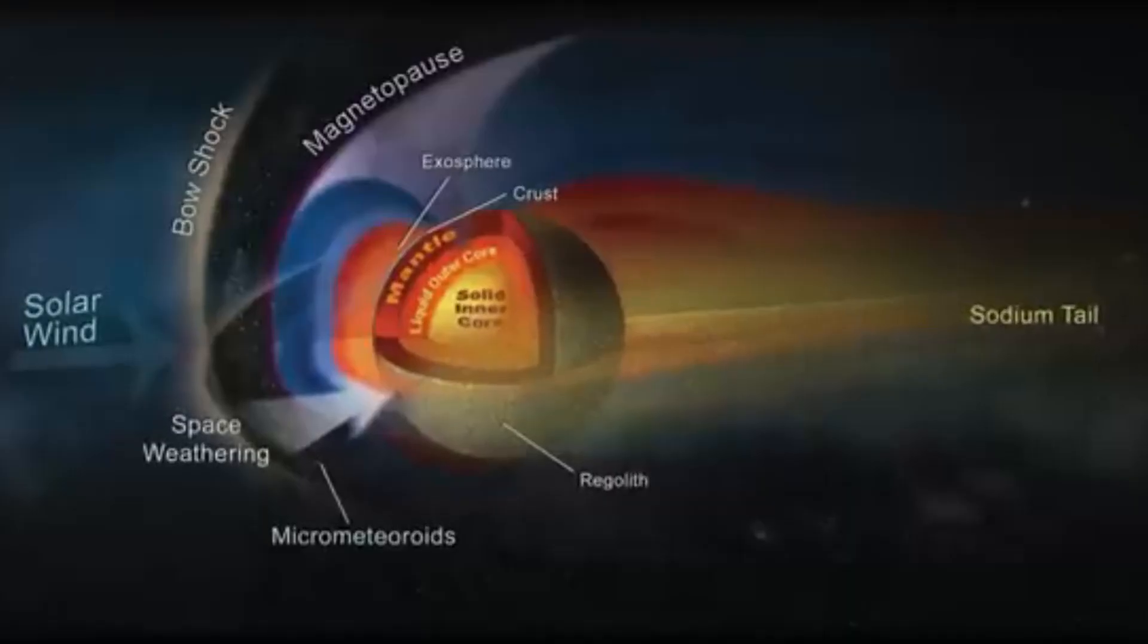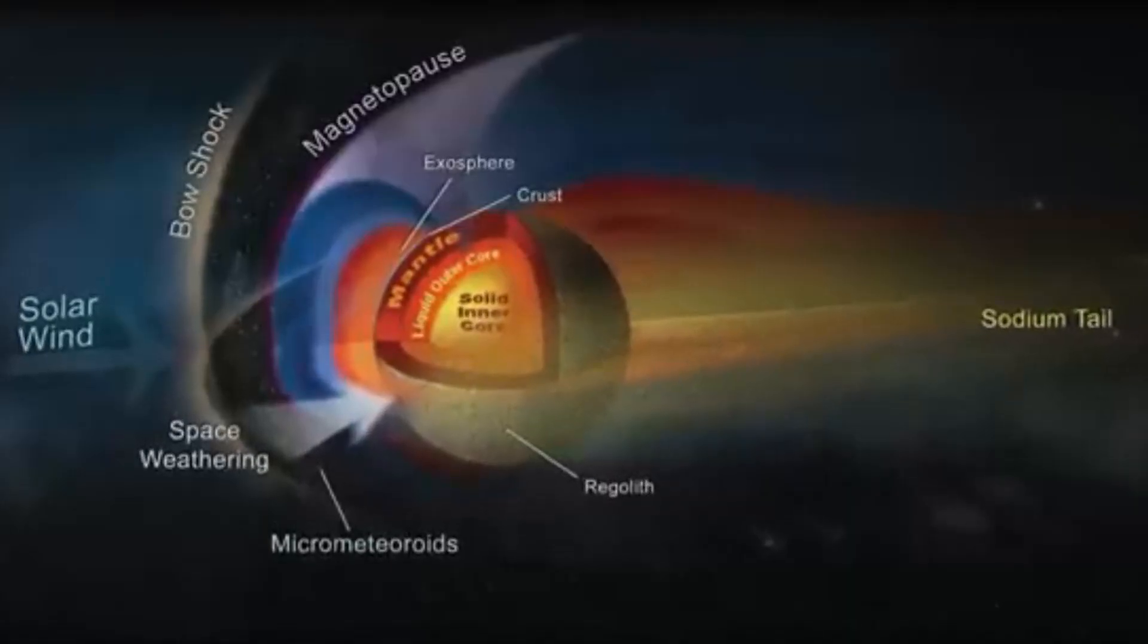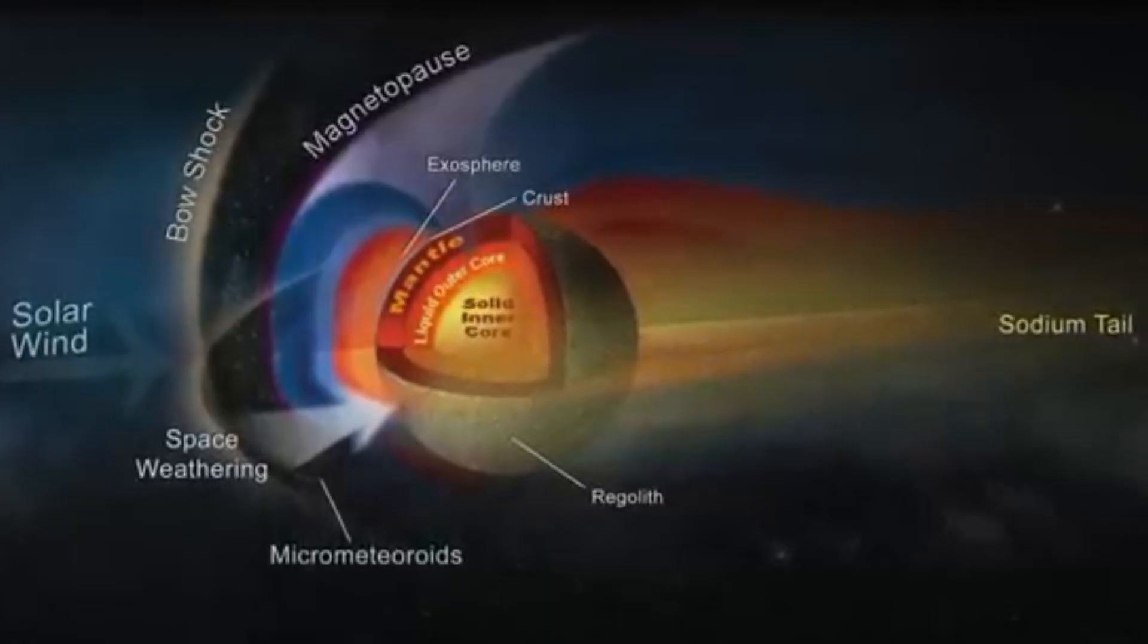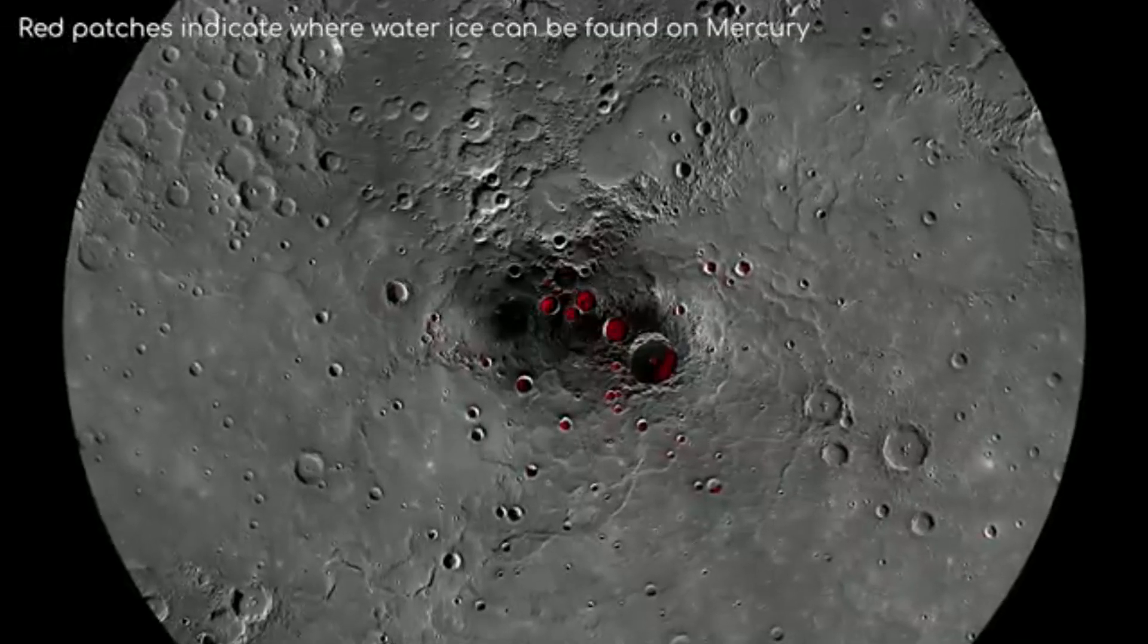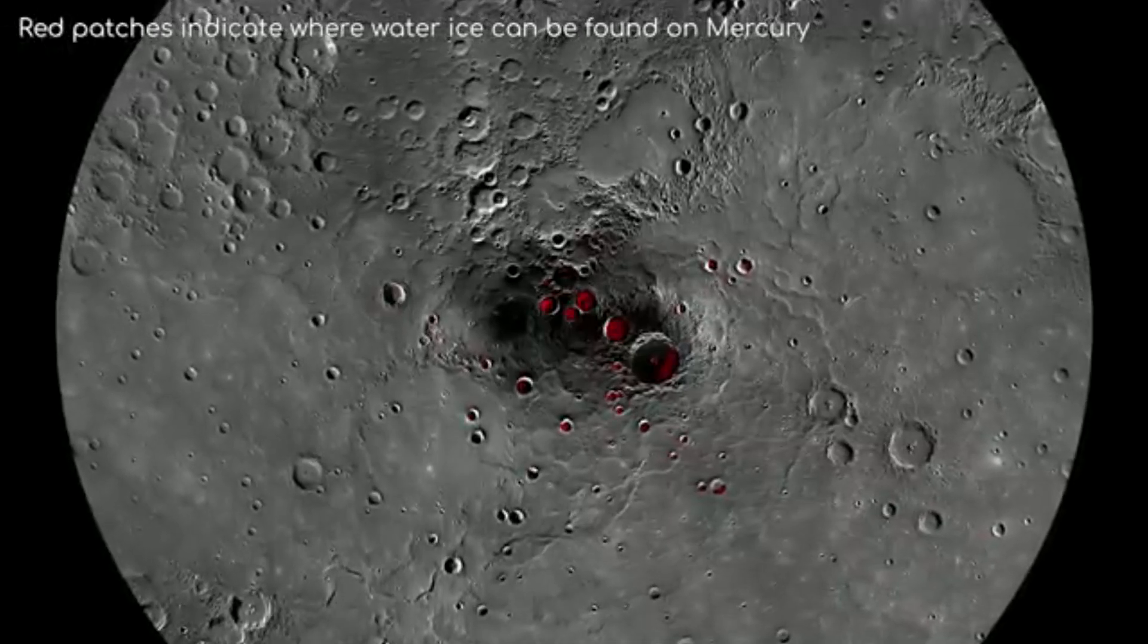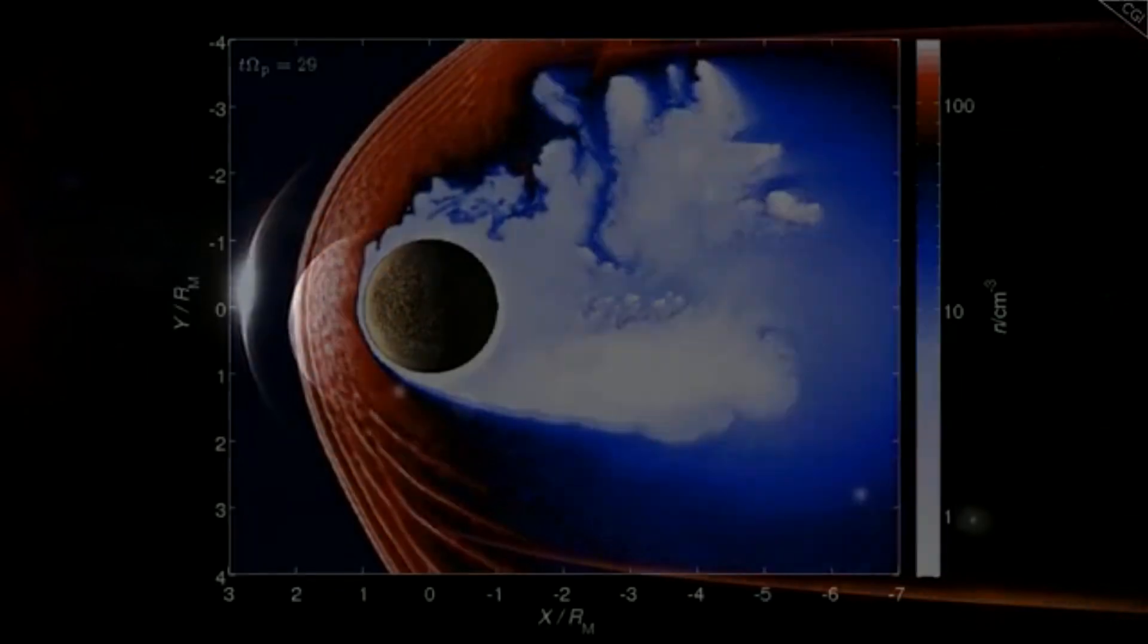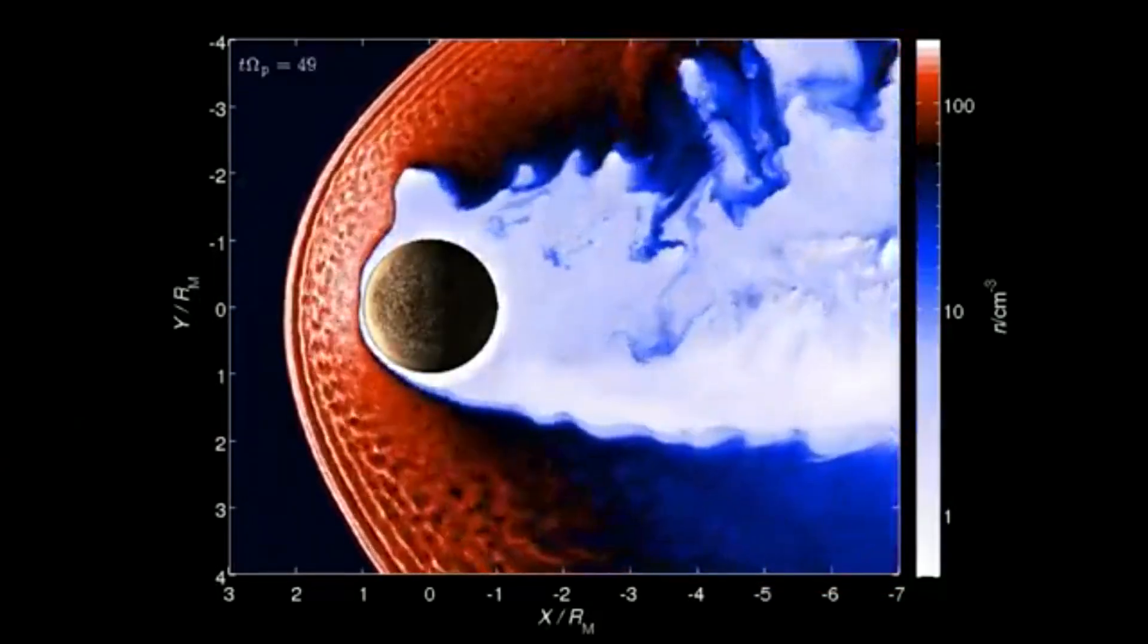Mercury's inner core is much larger than Earth's inner core, making up only about 20% of Earth's core volume. Additionally, while Mercury has a surprisingly strong magnetic field for a small planet, it remains much weaker than Earth's. This difference is closely tied to the size and state of Mercury's core.